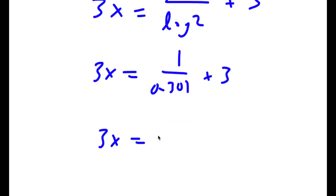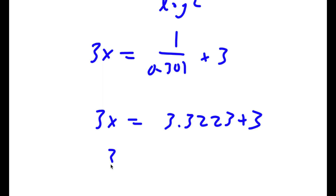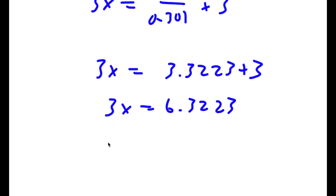And 1 over log 2 is the same thing as 1 over 0.301 plus 3, which equals 3.3223 plus 3. So I have 3x is equal to 6.3223, meaning x is equal to 2.1074.